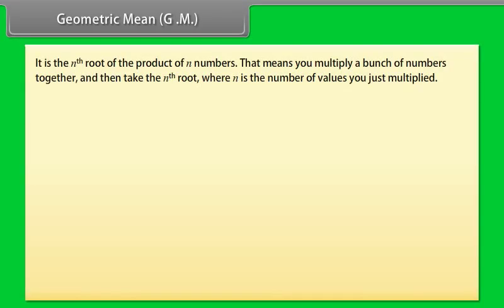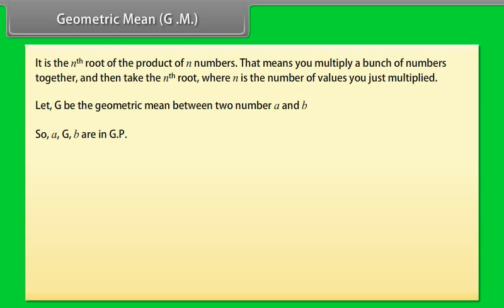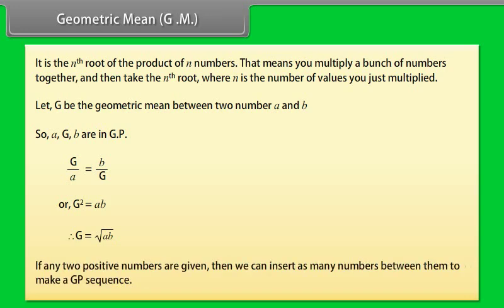The geometric mean (GM) is the nth root of the product of n numbers. You multiply a bunch of numbers together and then take the nth root, where n is the number of values multiplied. Let G be the geometric mean between two numbers A and B. So A, G, B are in GP: G/A = B/G, or G² = A×B, therefore G = √(A×B). If any two positive numbers are given, we can insert as many numbers between them to make a GP sequence.